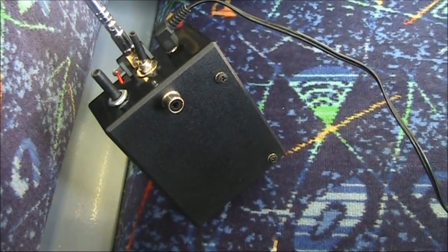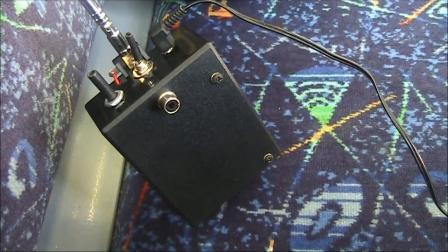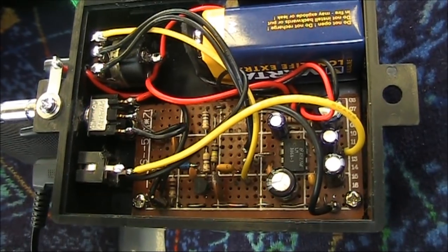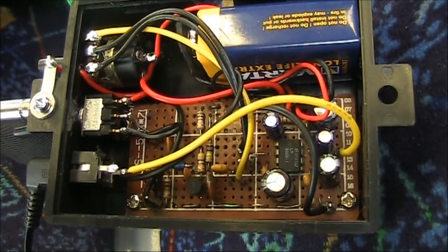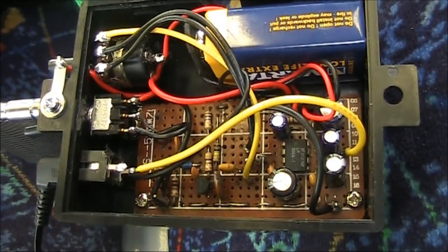Also, if there are AM signals close by and you're not sure of the frequency, you'll be able to pick them up on this little receiver. It's very simple, just a two-stage audio amplifier with a crystal set type front end.